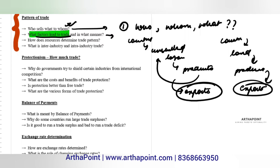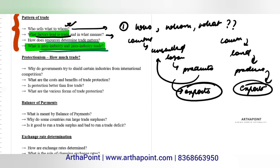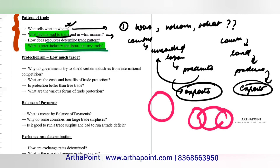Next, we look at how resources determine the trade pattern. A country may have land, labor, and different resources — the question is how these resources determine who will export and who will import. We also look at inter-industry and intra-industry trade, and we will do a formula for this. Can trade take place within an industry? Can trade take place between industries? We want to understand both of these.